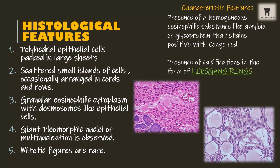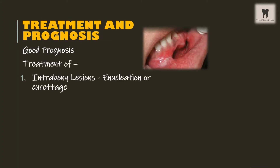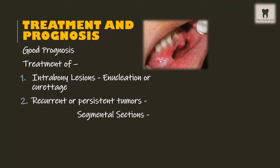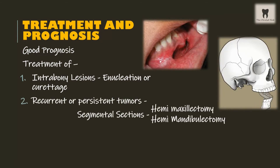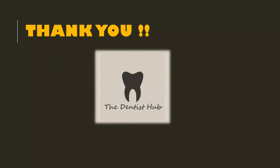Other important characteristic features of CEOT include the presence of a homogeneous eosinophilic substance resembling amyloid or glycoprotein that stains positive with Congo red, and calcifications in the form of Liesegang rings. Pindborg tumor has a good prognosis. Intra-bony lesions are treated by enucleation or curettage, and recurrent or persistent tumors are treated by segmental sectioning such as hemimaxillectomy or hemimandibulectomy. The recurrence and malignant transformation rate in CEOT is rare.